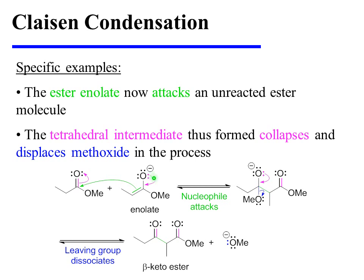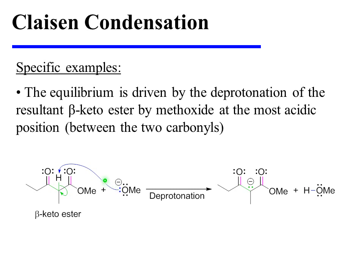The ester enolate now attacks an unreacted ester molecule, displacing pi electrons onto oxygen. The tetrahedral intermediate that forms subsequently collapses, displacing methoxide. A beta-ketoester is formed, but that beta-ketoester is not quite done reacting. The equilibrium is driven by the deprotonation of the beta-ketoester by methoxide, and this deprotonation occurs at the most acidic position — the one between the two carbonyls — yielding a new enolate.